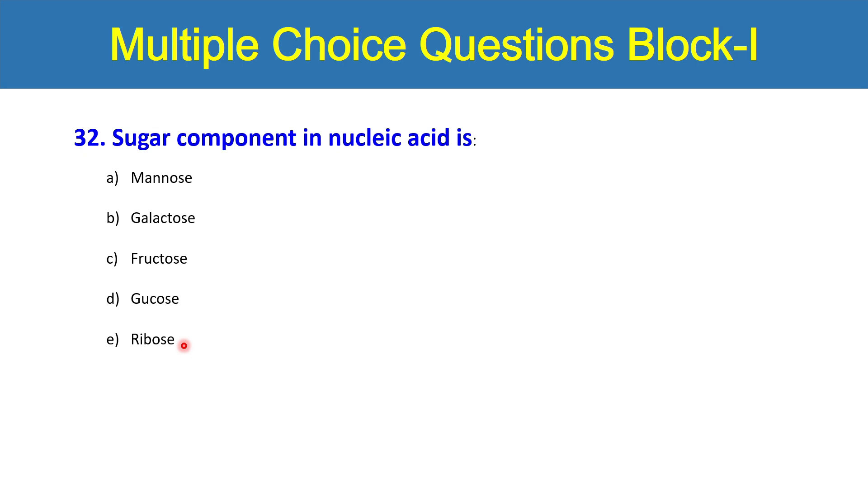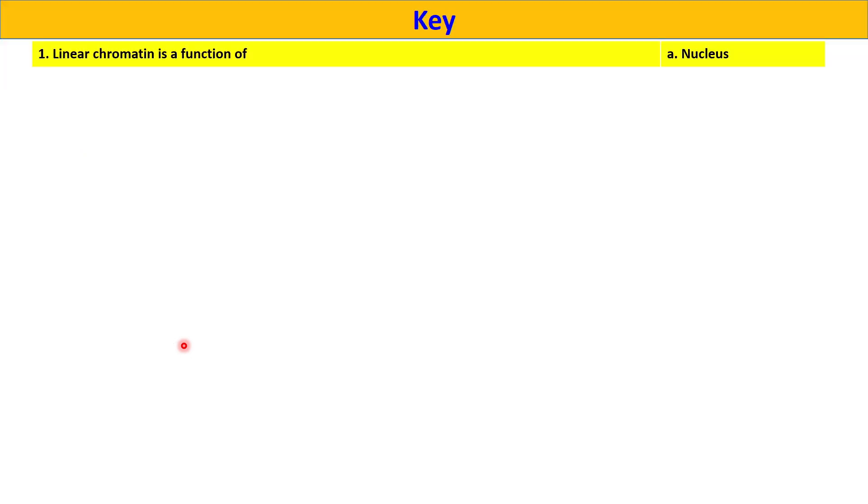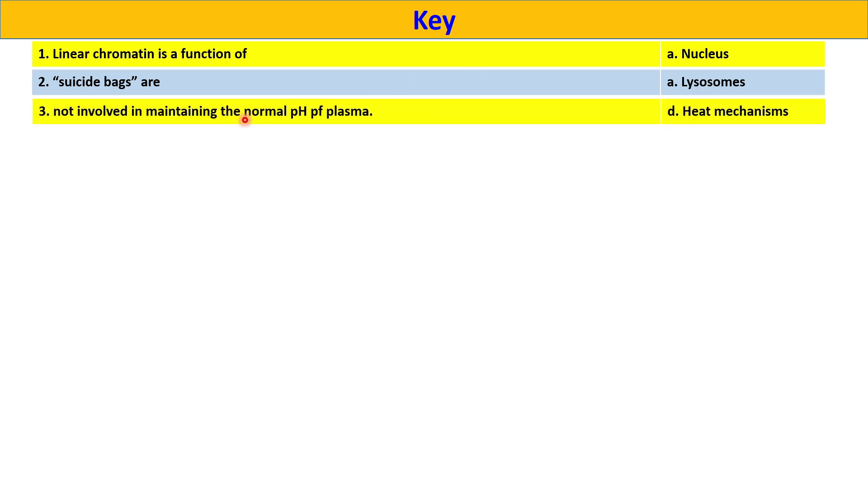Now dear students, I am going to provide you the key. Linear chromatin is a function of nucleus because the chromatin is present in the mitochondria as well, but it is not linear. The chromatin present in the mitochondria is circular. The chromatin present in the nucleus is linear. That's why the question was select the linear chromatin as a function of nucleus. Suicide bags are lysosomes. Not involved in maintaining the normal pH of plasma, heat mechanism is not involved.